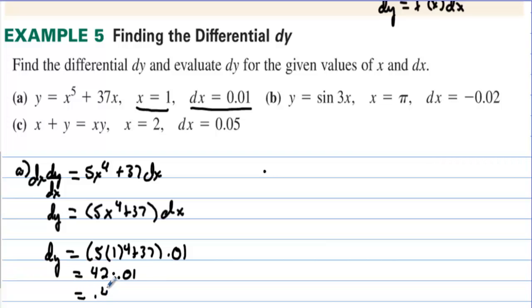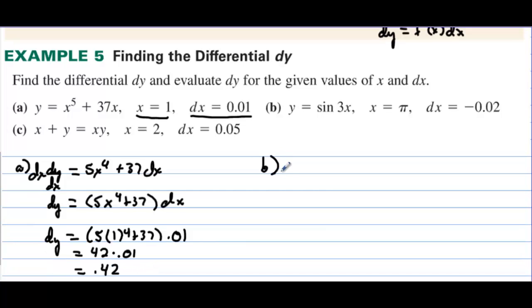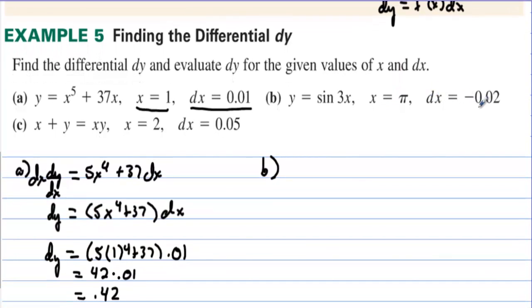Letter b. We have y equals sine of 3x. We are going to evaluate this at pi, and the differential for x is negative 0.02.